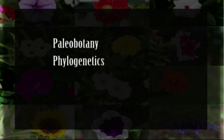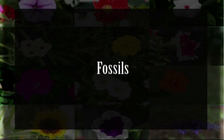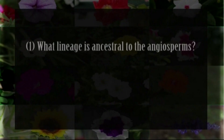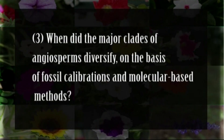Let us analyze the recent trends in studies on the origin of angiosperms. Through contributions from paleobotany, phylogenetics, classical developmental biology, and modern developmental genetics, tremendous progress has recently been made in elucidating the origin and diversification of angiosperms. Paleobotany has at least three crucial roles: determining which lineage is ancestral to angiosperms, identifying what the first angiosperms were and how characters evolved, and determining when the major clades of angiosperms diversified — using fossil calibrations and molecular-based methods.